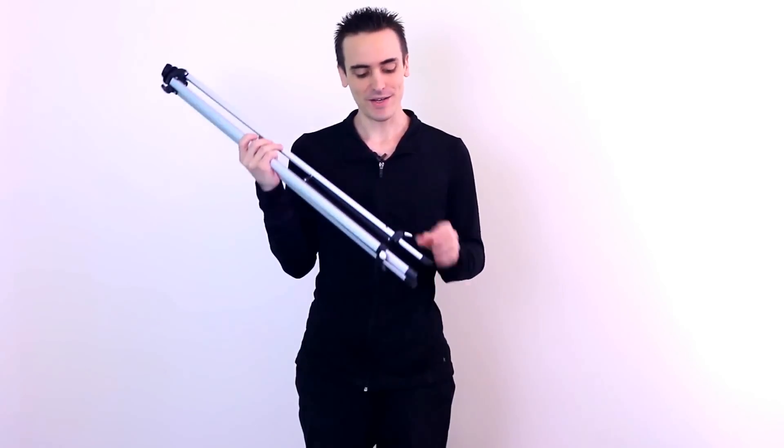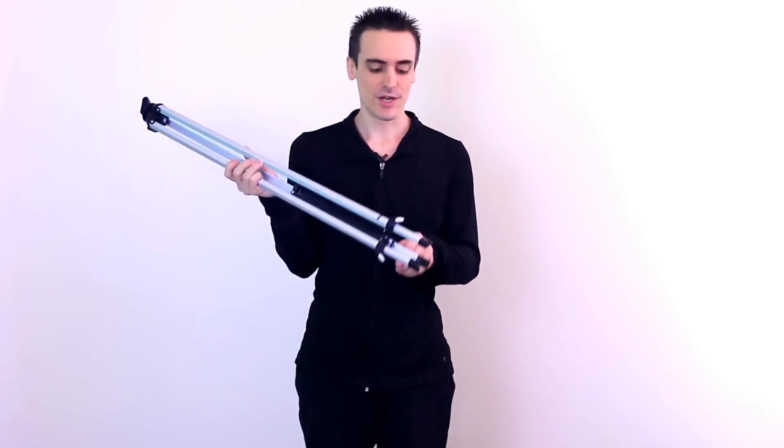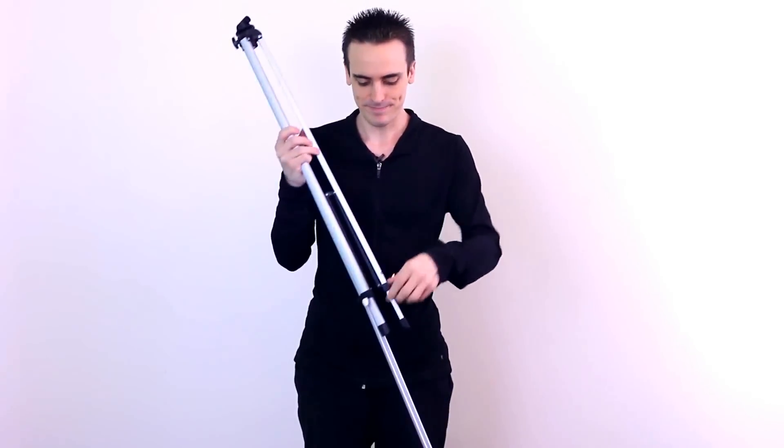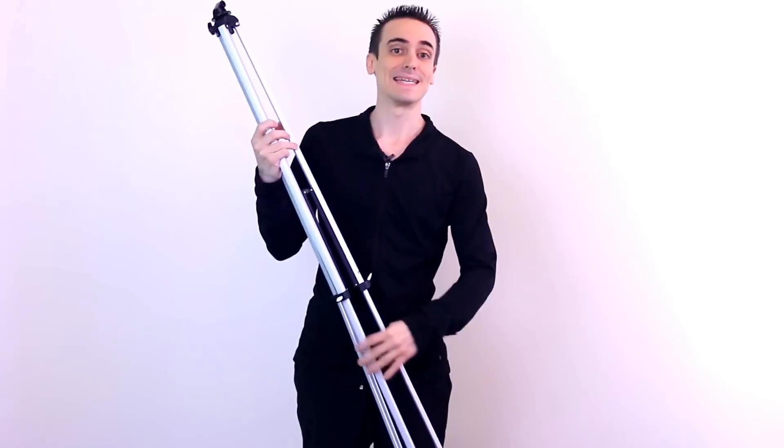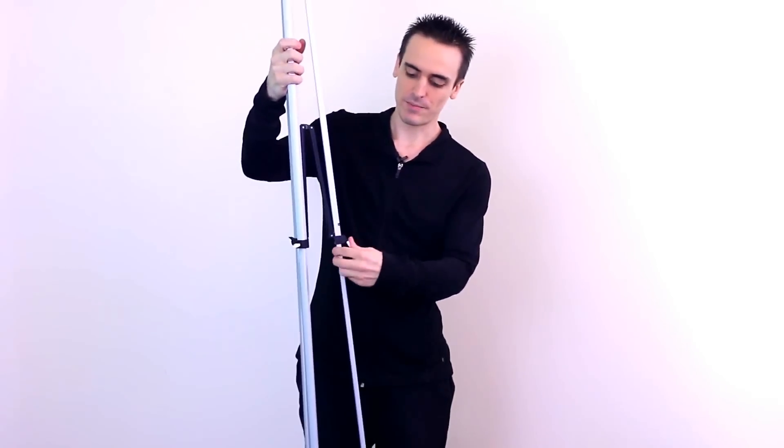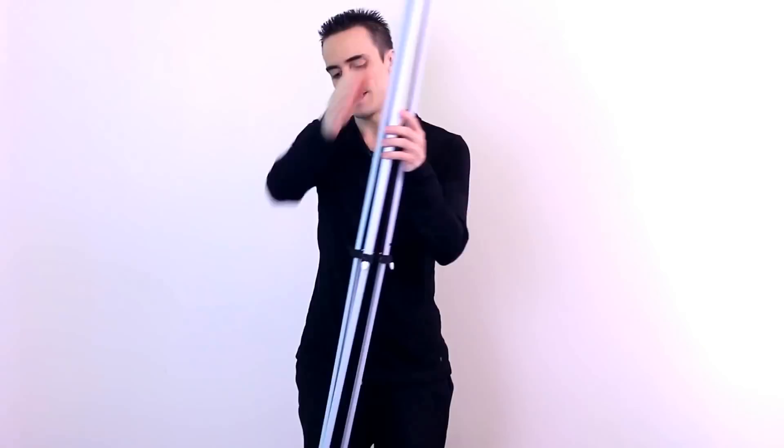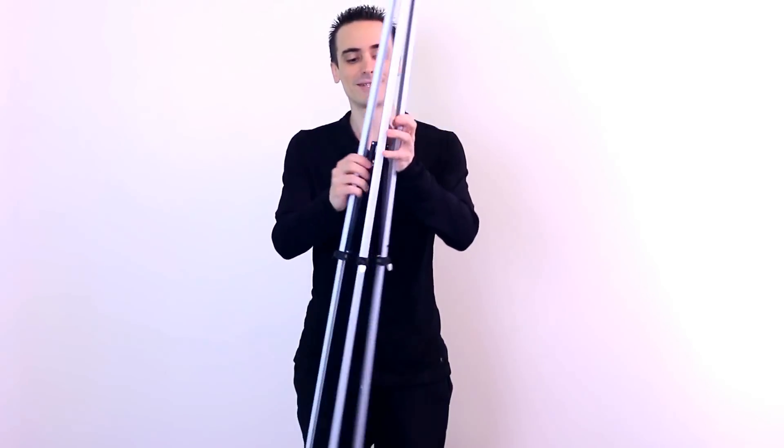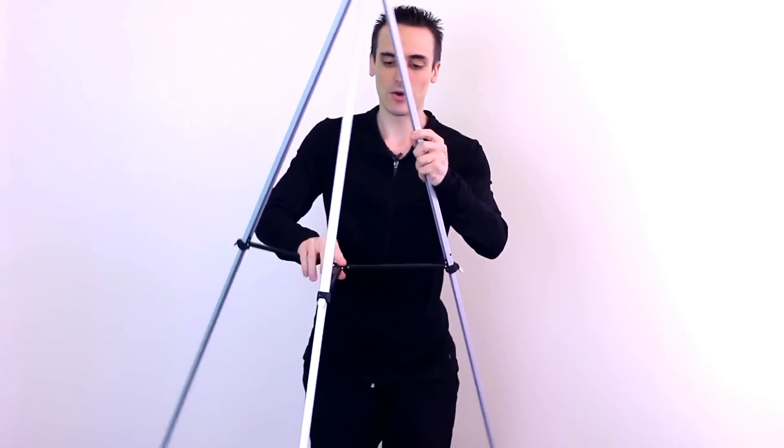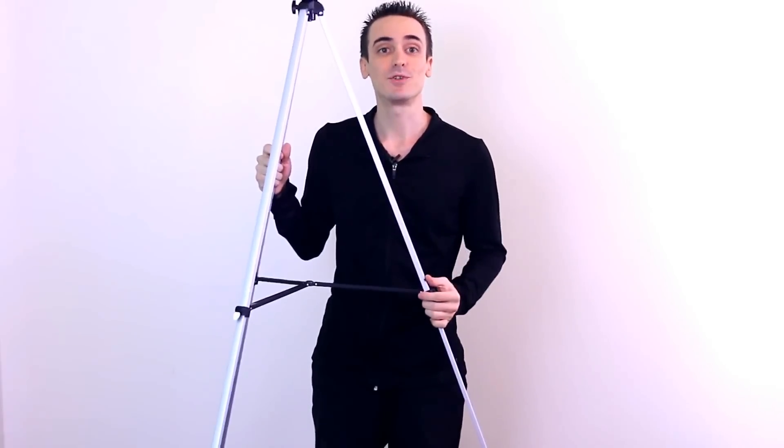Once you've got your tripod in your hand you'll notice at the bottom there's three levers. Go ahead and start flicking those up and let the legs fully extend like so. Once that happens flip the levers back down to lock the legs in place. Now you need to spread the legs apart and push down the center bracket here just like so. And we're all set now for step two.